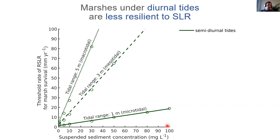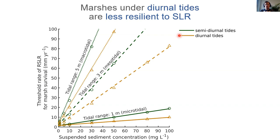The model results show on the y-axis the threshold rate of relative sea level rise for marsh survival — the maximum rate of sea level rise a marsh can withstand before converting into bare tidal flat or open water — as a function of sediment concentration and tidal range. Higher sediment concentration and tidal range means a higher rate of sea level rise the marsh can withstand. That is the result for semidiurnal tides. When we superimpose results for diurnal tides, regardless of tidal range and sediment concentration scenarios, the predicted threshold rate of sea level rise is consistently lower — indicating that marshes forced by diurnal tides are less resilient to sea level rise.